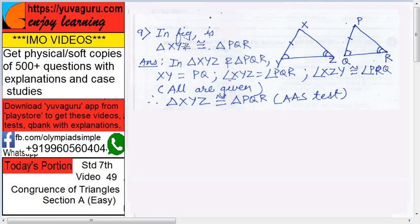In the given figure, is triangle XYZ congruent to triangle PQR? Are they congruent?